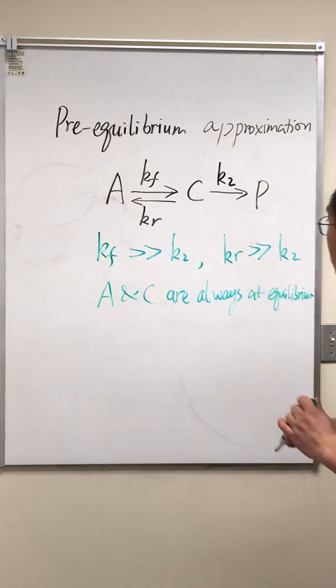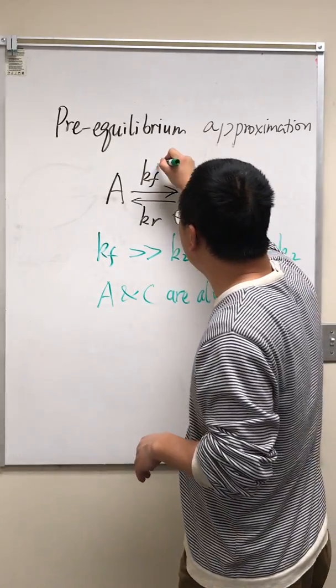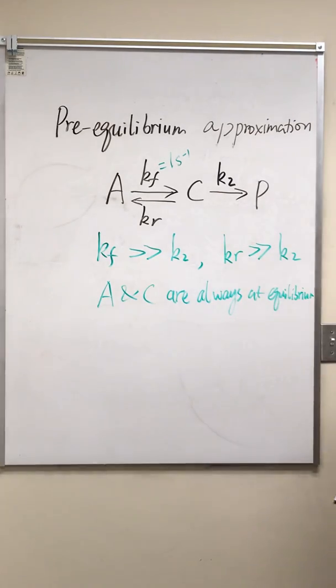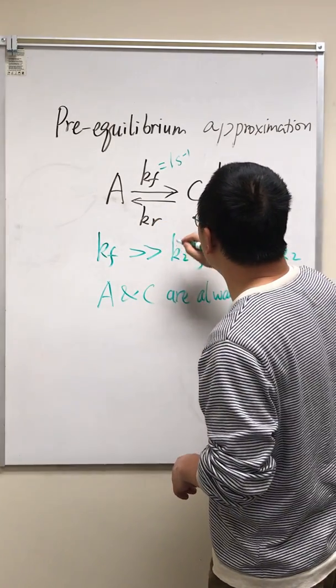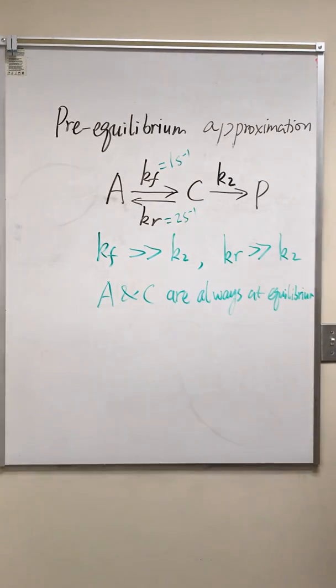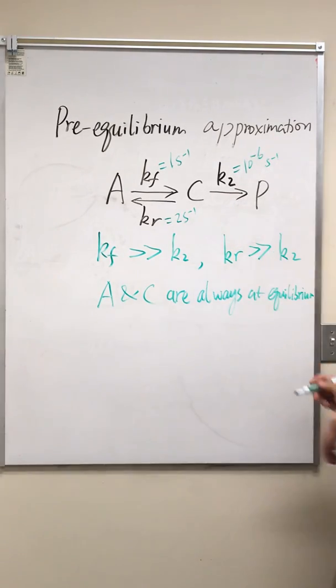Now I'm going to give you a numerical example. So let's say K sub f equals maybe just 1 per second, K sub r is 2 per second, and I'll say this K2 is equal to a very small number.